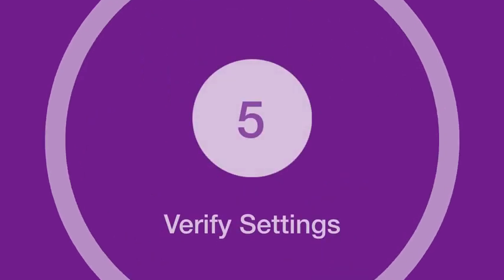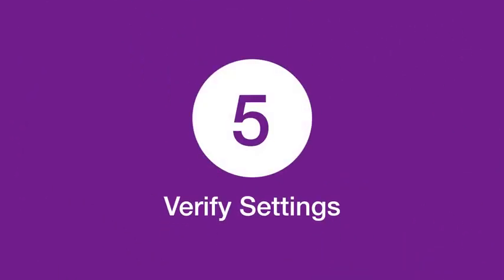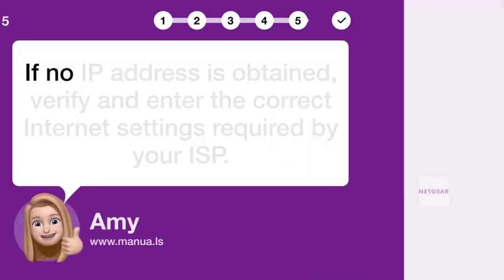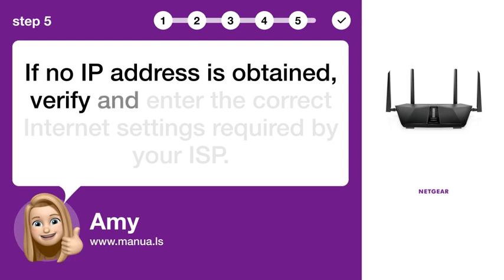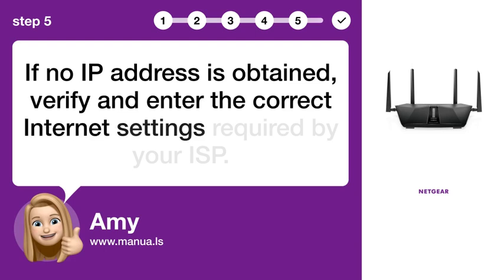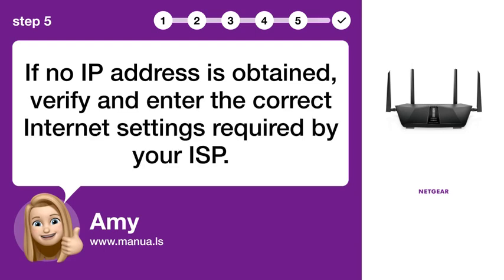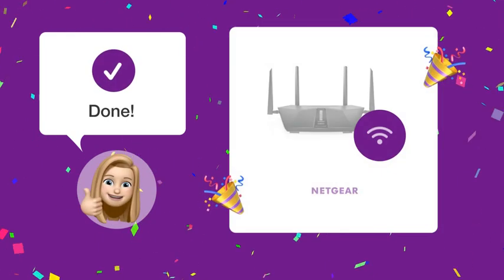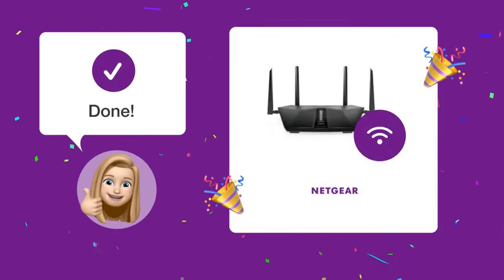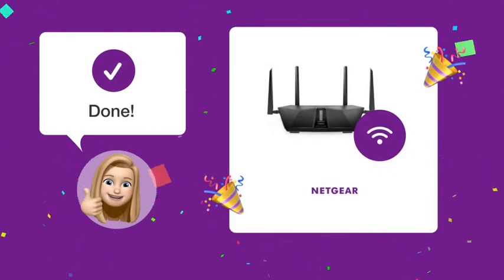Step 5: Verify settings. If no IP address is obtained, verify and enter the correct Internet settings required by your ISP. Following these steps should resolve the red internet LED issue.